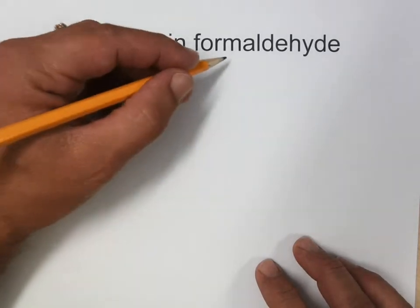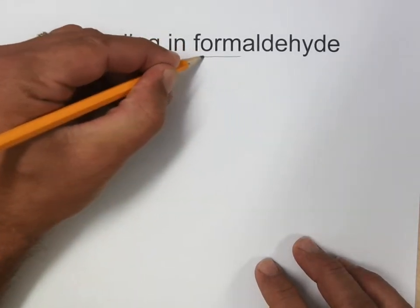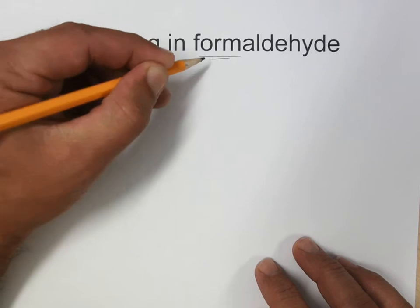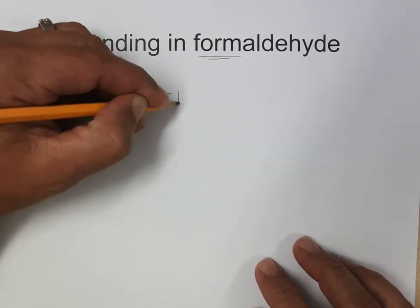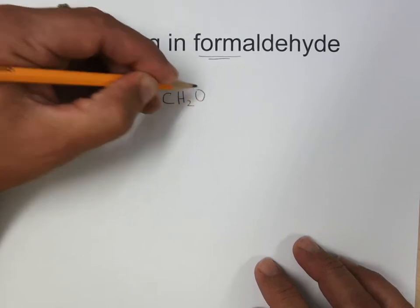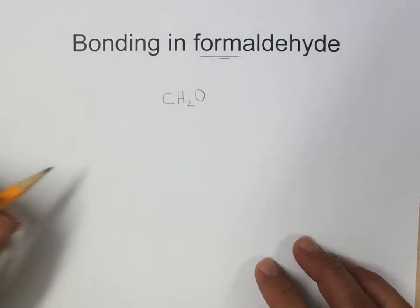Formaldehyde is, from the old nomenclature, form meant one carbon. So there's one carbon, two hydrogens, and an oxygen in formaldehyde.